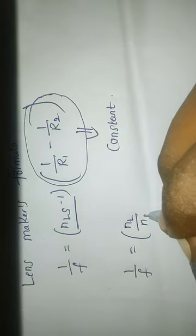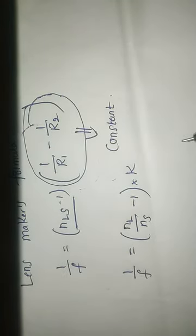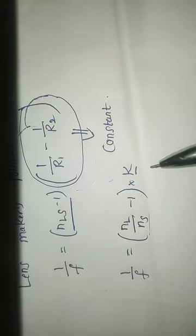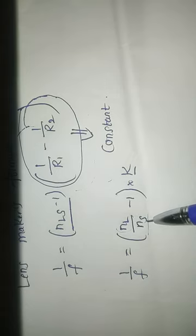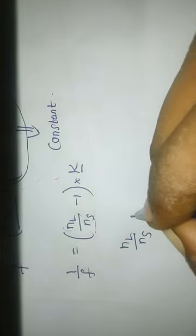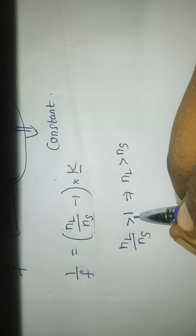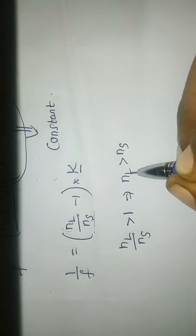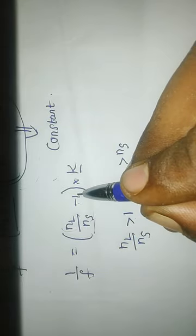NL is always constant — that is the refractive index of the lens medium. NL, the refractive index of the lens medium, is always constant. Ns is the refractive index of the surrounding medium, and that is the variable. Suppose NL/Ns is greater than 1 — meaning the refractive index of the lens is greater than that of the surrounding medium. So NL/Ns − 1 is greater than 0.